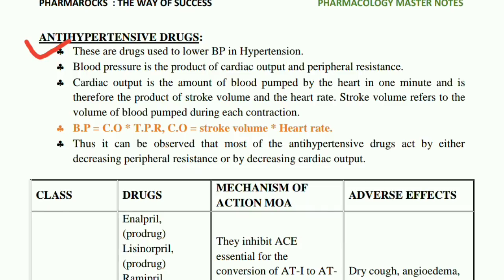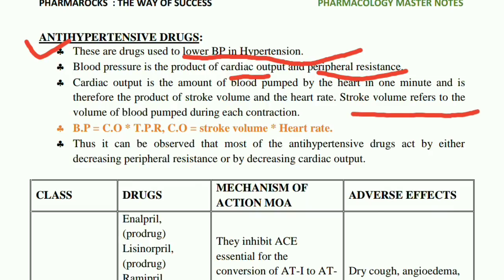These are the drugs used to lower the blood pressure in hypertension. Blood pressure is the product of cardiac output and peripheral resistance. Cardiac output is the amount of blood pumped by the heart in one minute, and is therefore the product of stroke volume and the heart rate. Stroke volume refers to the volume of blood pumped during each contraction.